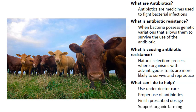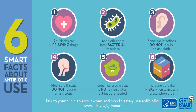Another way to help slow the spread of antibiotic resistance is to support organic farming. A lot of antibiotics are used in livestock, so by supporting organic farming you're supporting farming without the use of antibiotics, pesticides, fertilizers, and other unnatural chemicals. And there you have antibiotic resistance — pause the video if you'd like to review six smart facts about antibiotic use. Thanks for watching, and please place your comments in the box below.